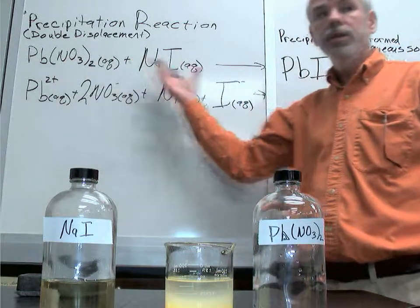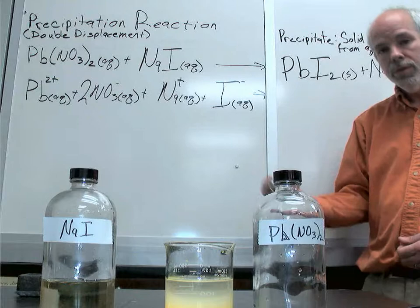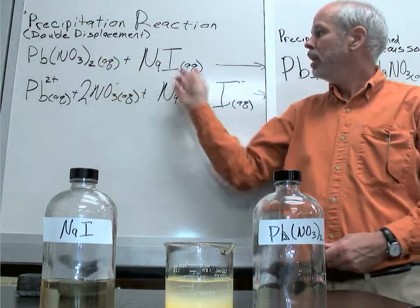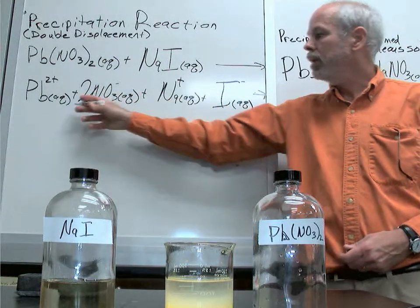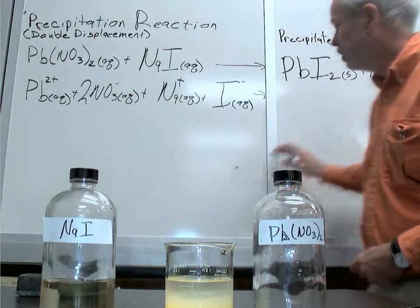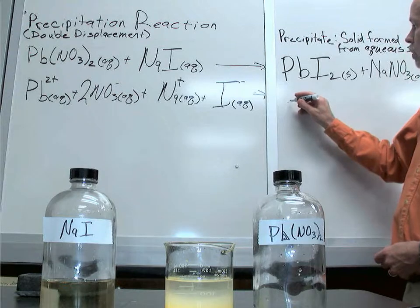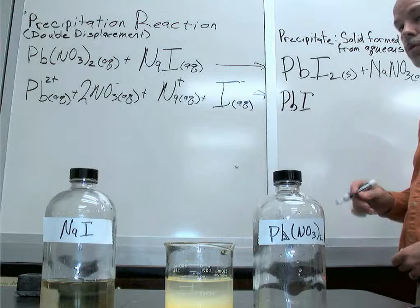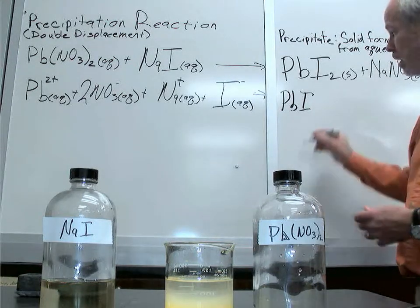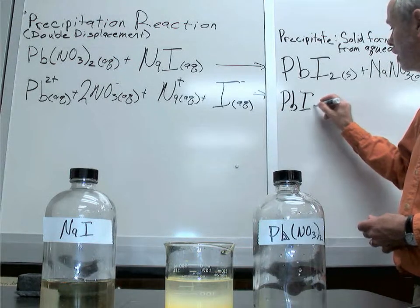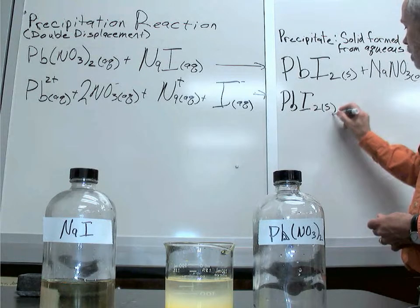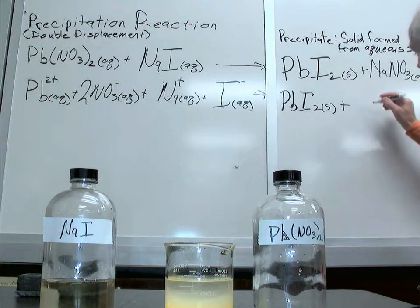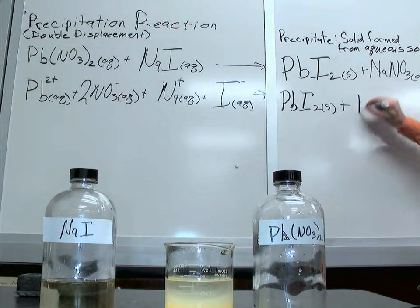Now, of course, these are written as though they were formulas in solid compounds together, but we know that when these soluble compounds are aqueous, the ions pop apart, so we can draw that in this form as well. The PbI2 does not pop apart when it is solid — it stays together, so we're going to leave this as a solid, but we can draw the sodium nitrate the way it is in solution.